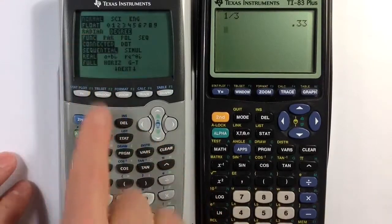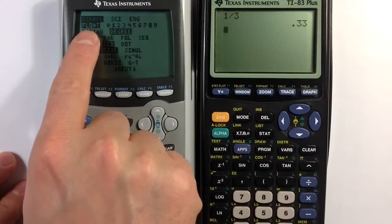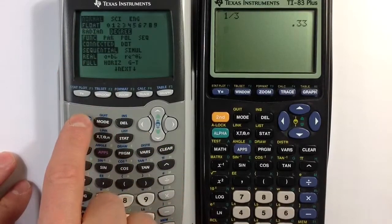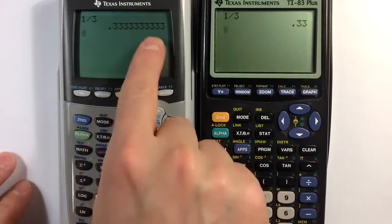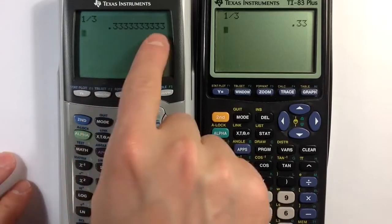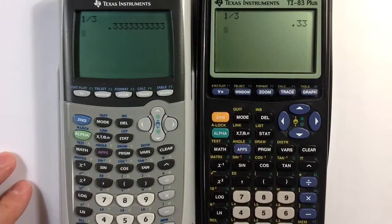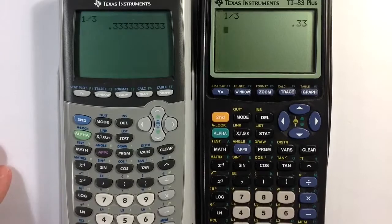In the float, which is the default option typically, if I take in one third, it will give me I think maybe ten, nine or ten decimal places there, basically as many as it can.